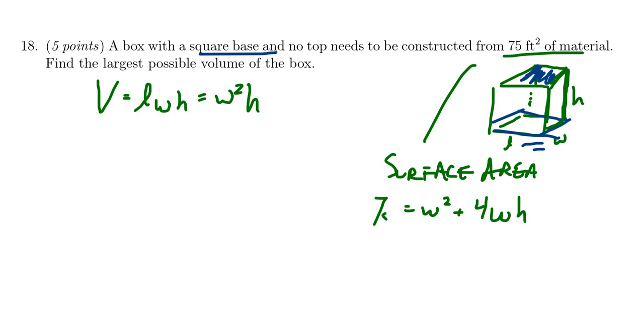But the surface area we know what it is by the constraint. The surface area is supposed to be 75. So we can use this to solve for h. Subtract w squared from both sides, we get 4wh equals 75 minus w squared. Divide both sides by 4w, we get h equals 75 minus w squared over 4w.